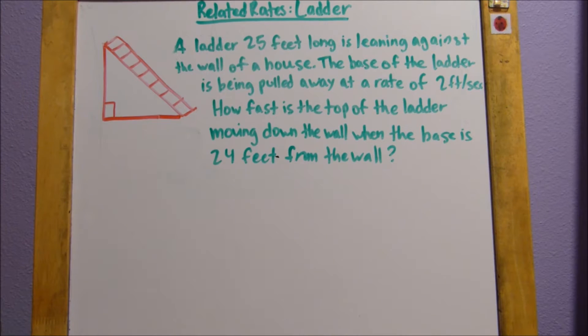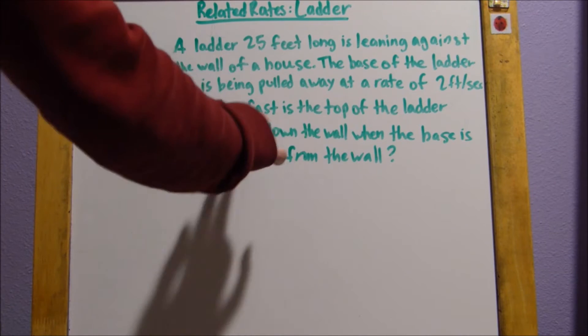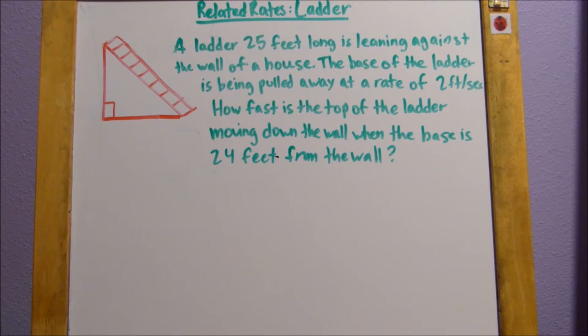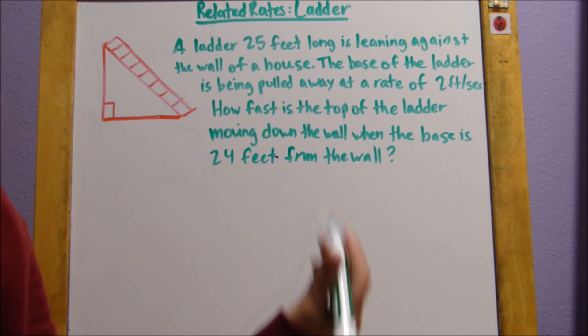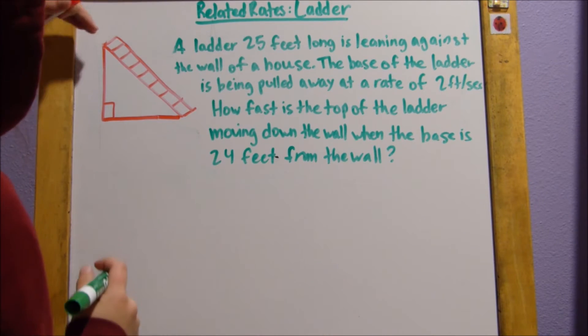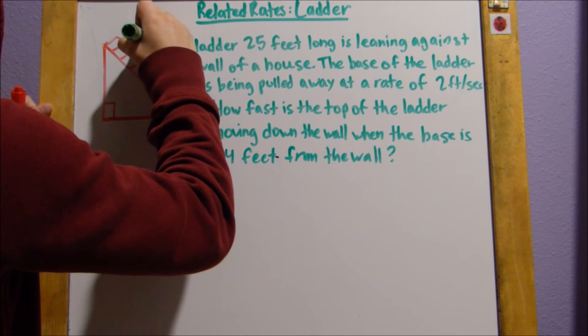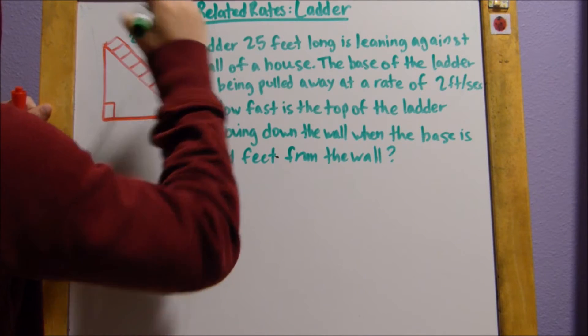So here you can see this nice little diagram that I quickly sketched out. The first step that I like to do when I'm given a related rates problem is I like to take all these little tidbits of information that I'm given and I like to put them in a diagram so I can figure out what I'm solving for. So a ladder, this is 25 feet long, so this side length is going to be 25 feet.